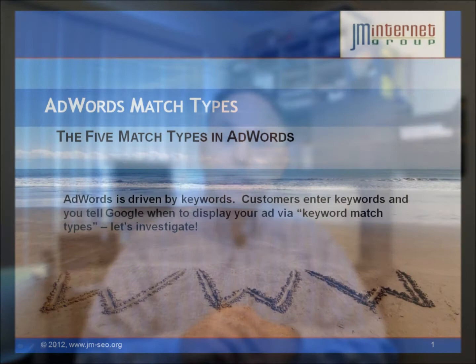Hello. My name is Jason McDonald. I'm director at the JM Internet Group. Did you know that there are five different match types in AdWords for your keywords? In this video, we're going to explain the five different match types in AdWords and how you can correctly use them to manage your campaigns for best effectiveness. Let's get started.